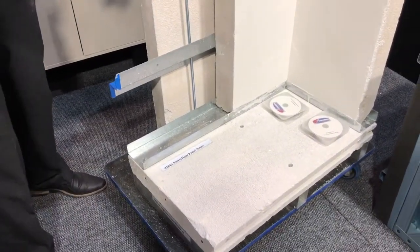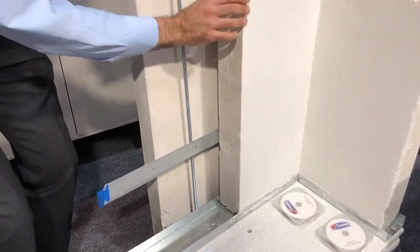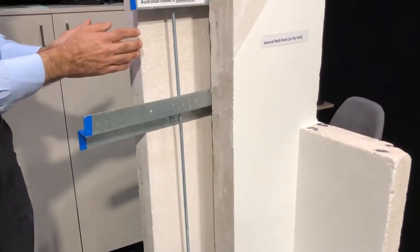If you are starting from your slab here, this is your slab, this is the bottom track, this is your internal wall and this is the cavity and this is your external wall.